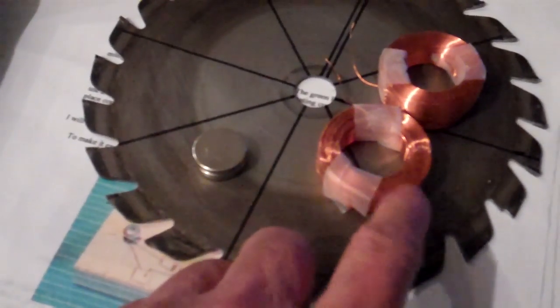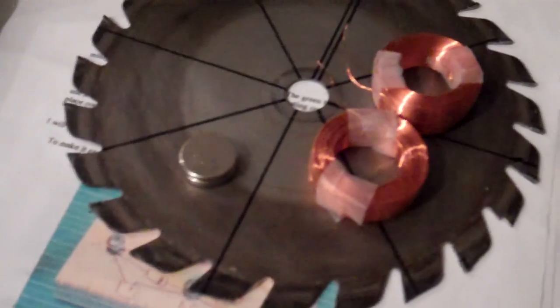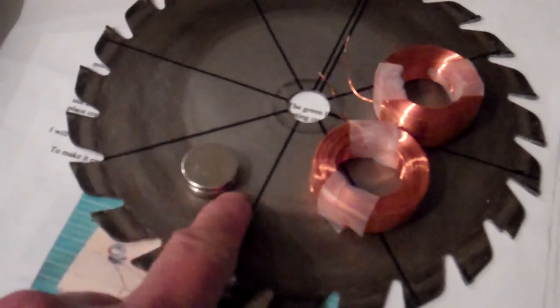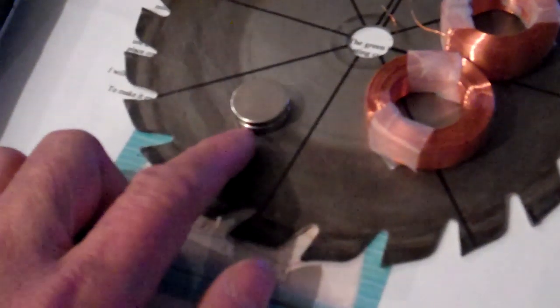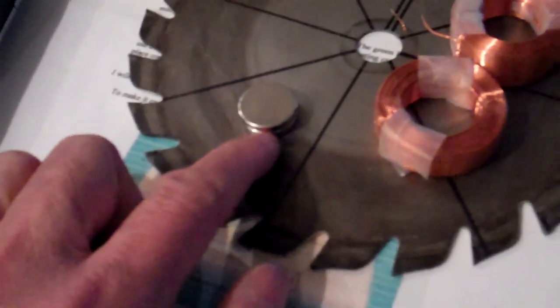These are 27 gauge wire, six coils and eight magnets. These are three quarter inch, one eighth thickness magnets. I'm going to use two of them stacked together so it will be like a quarter inch.